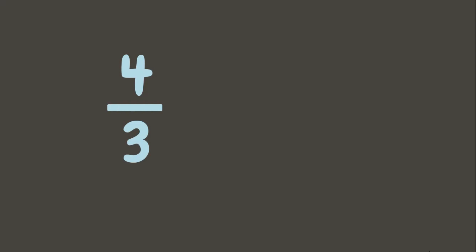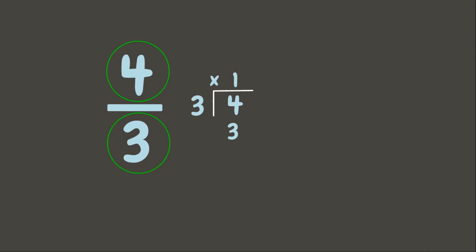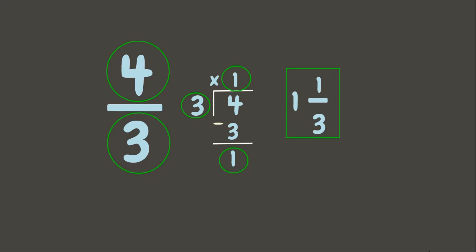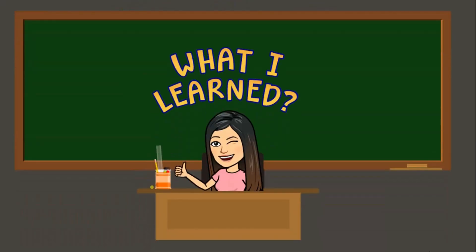Let's have another example — four-thirds. Since it is an improper fraction, we need to divide the numerator by the denominator. Four divided by three is one; one times three is three; four minus three is one. Therefore, we have one and one-third. This is now the mixed number of four-thirds. Great job!